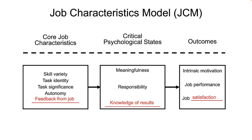The second psychological state is responsibility for work outcomes — having high levels of autonomy provides a tremendous sense of responsibility for making the right decisions. The third is knowledge of the results of the work performed — having on-the-job automatic feedback provides near instantaneous knowledge of how well one is doing. A frown or mean comment from a customer provides immediate feedback; bad reviews on Yelp can help one figure out where they went wrong. These three critical states result in the outcomes of increased intrinsic motivation, improved work performance, and high job satisfaction — making jobs better, decreasing turnover and counterproductive work behavior.